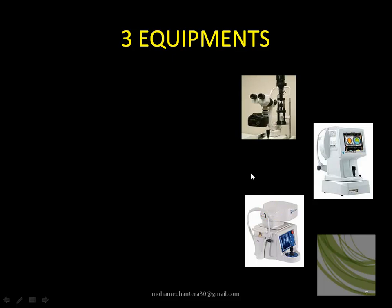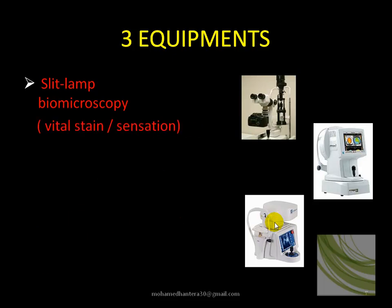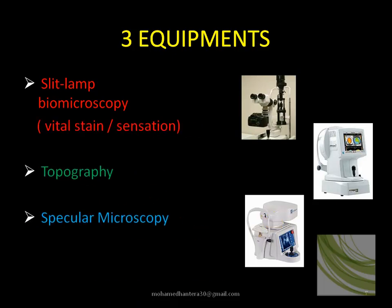There are three pieces of equipment that are very important to evaluate the cornea. First of all, the slit lamp examination, which is available everywhere; corneal topography to evaluate the corneal curvature; and lastly, specular microscopy to evaluate the endothelium.